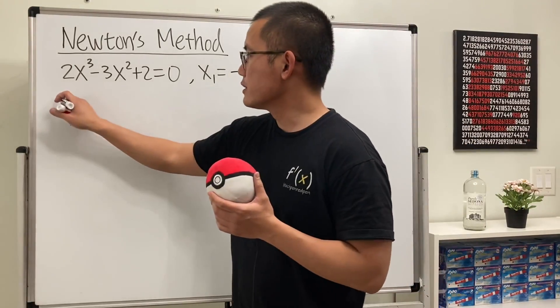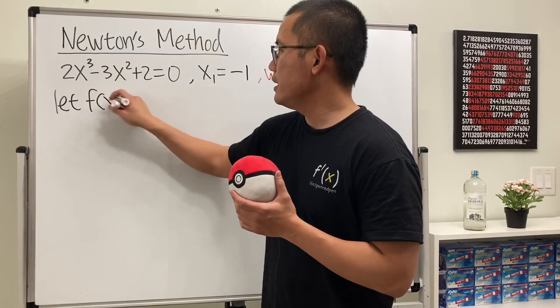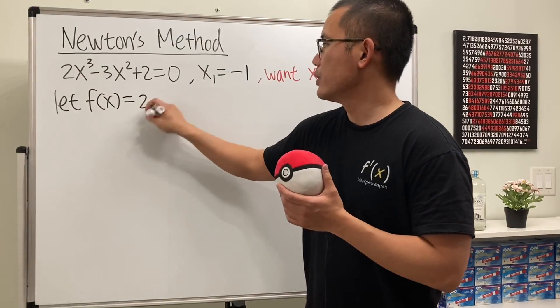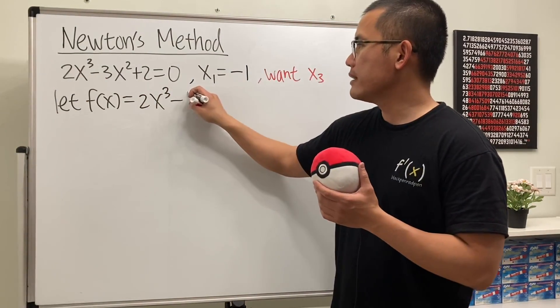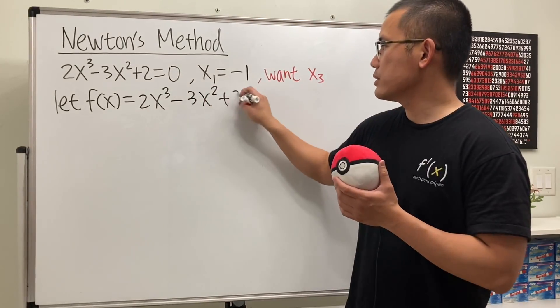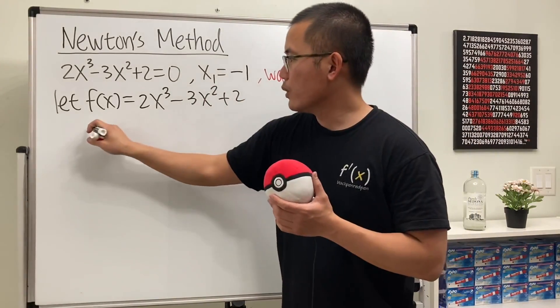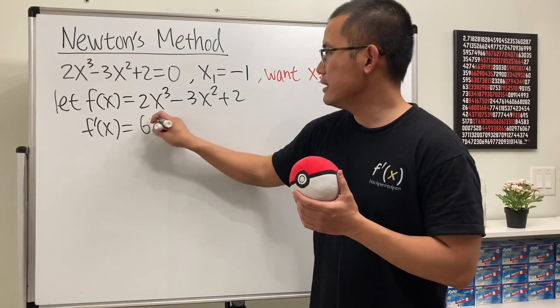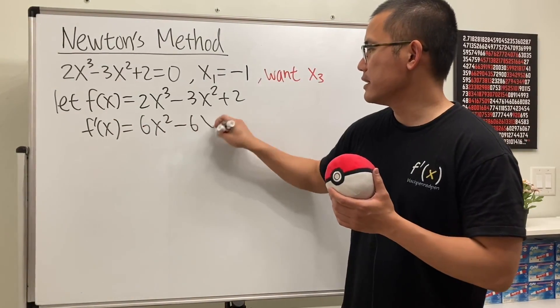So right here, we'll just say, let f of x be equal to this, which is 2x to the 3rd power minus 3x squared plus 2. And then, we will also get its derivative right here, which is going to be 6x squared minus 6x.